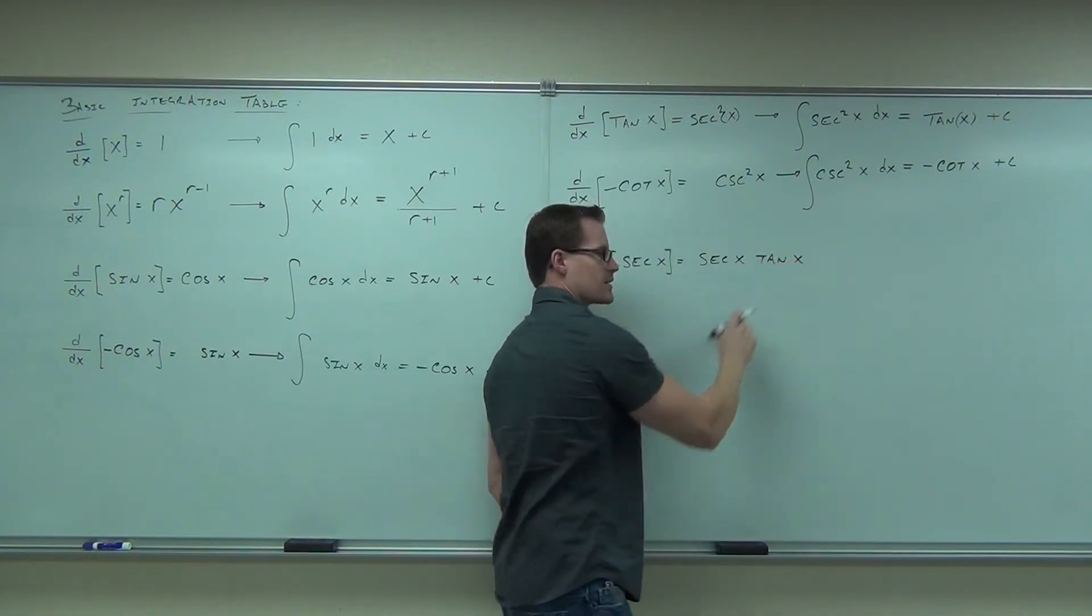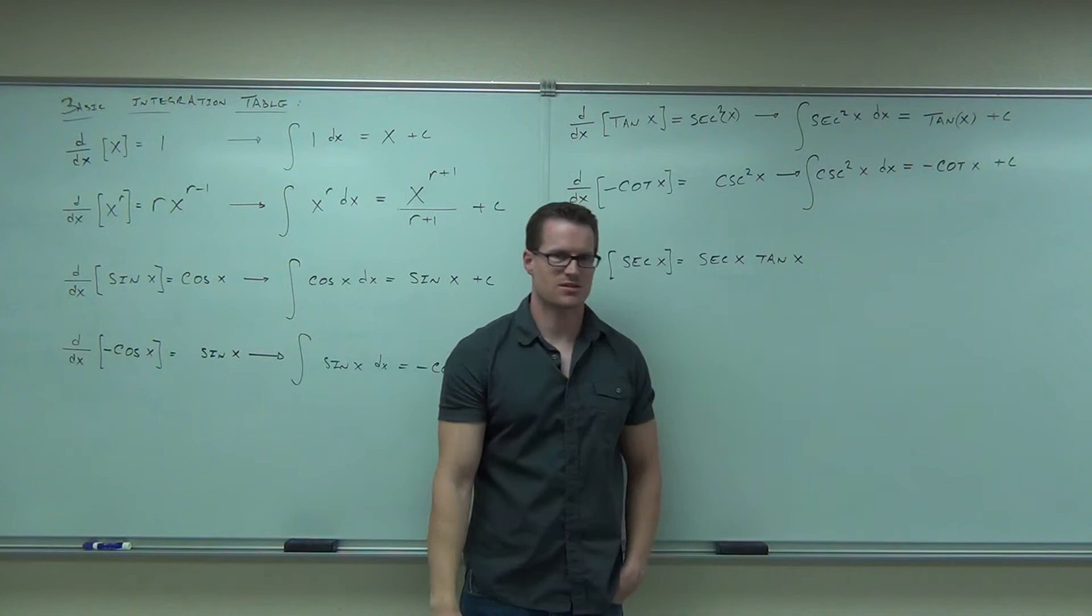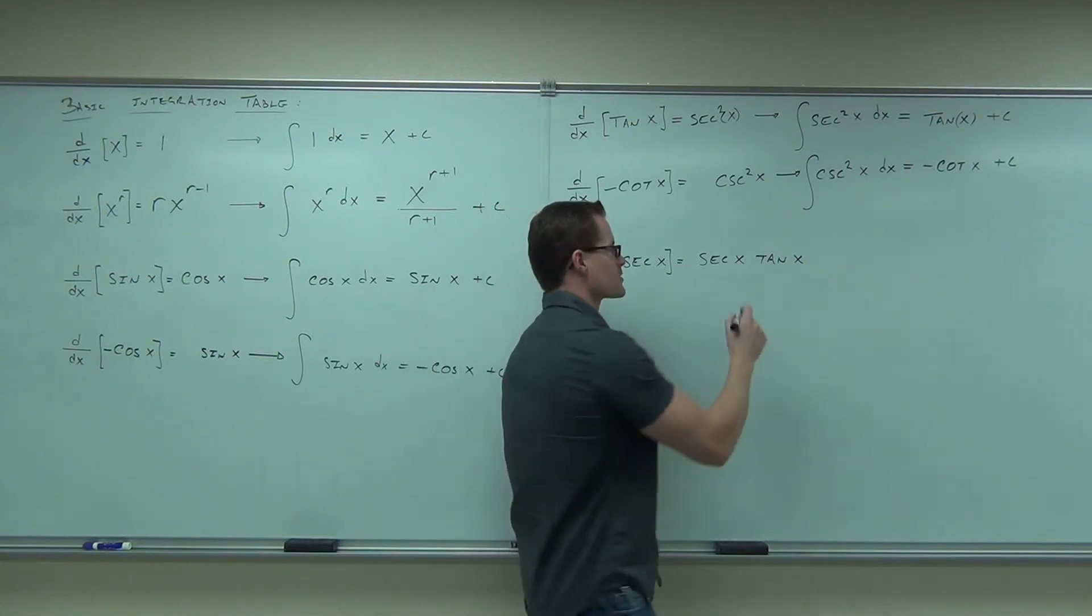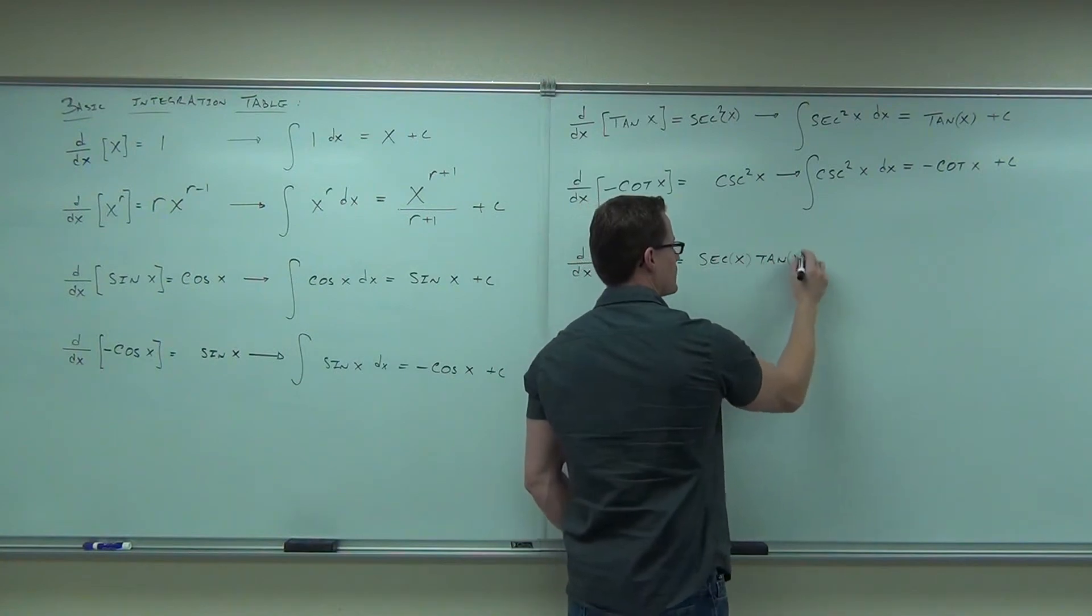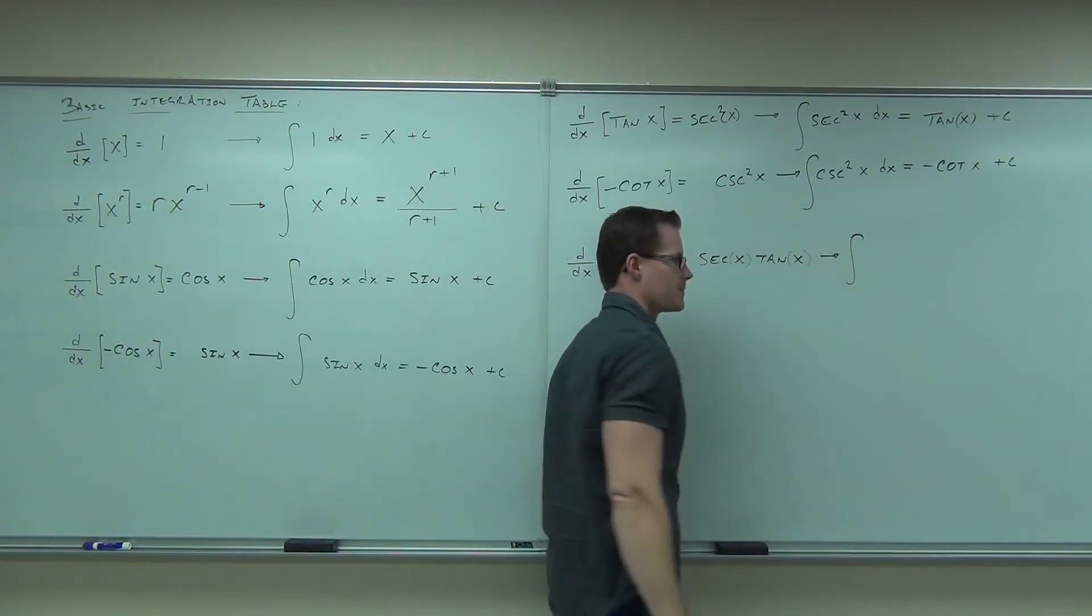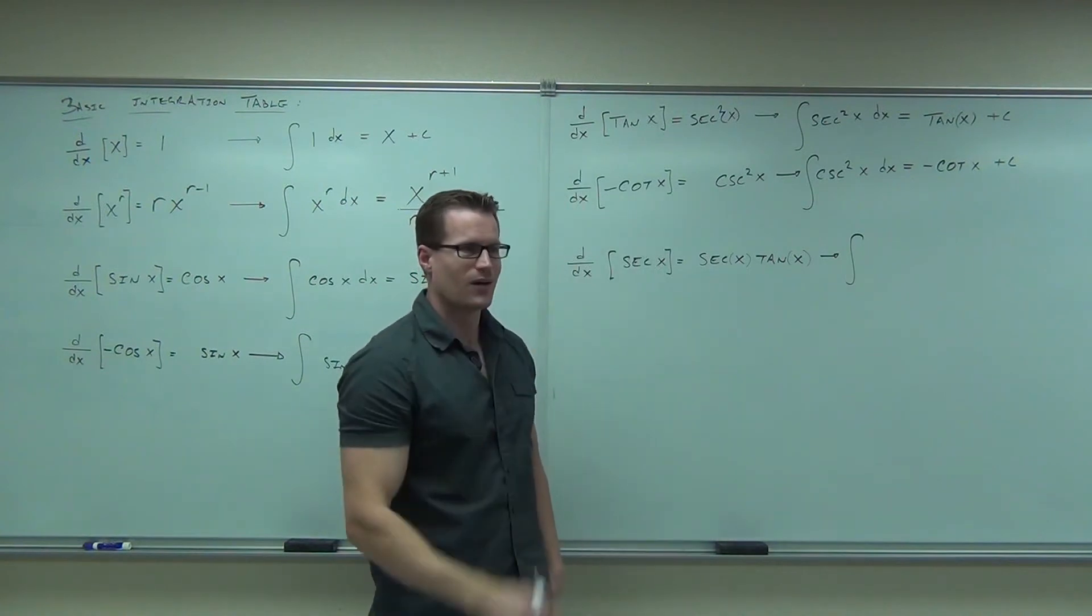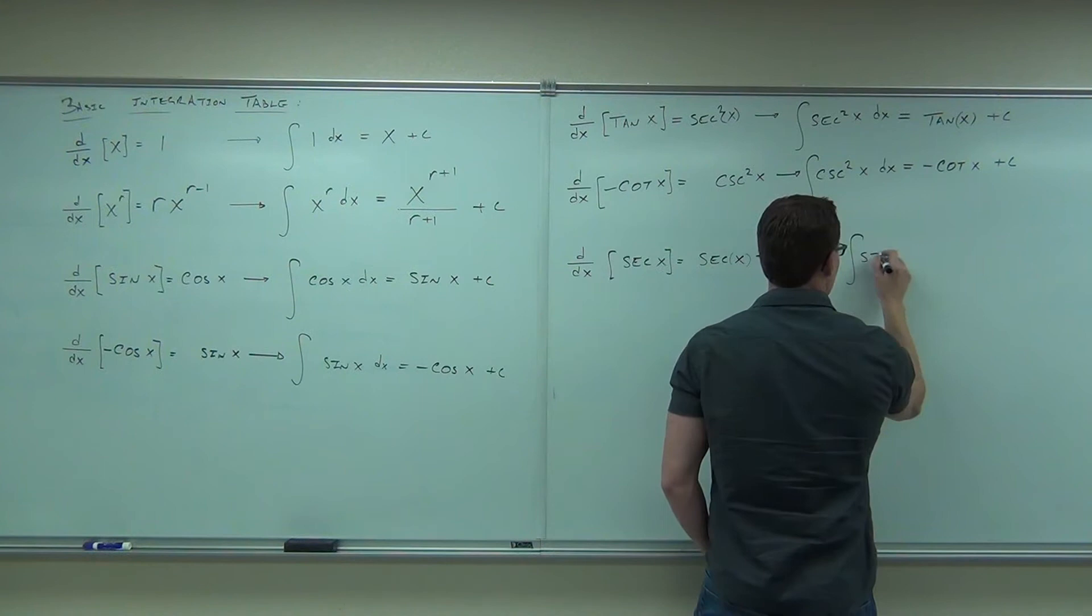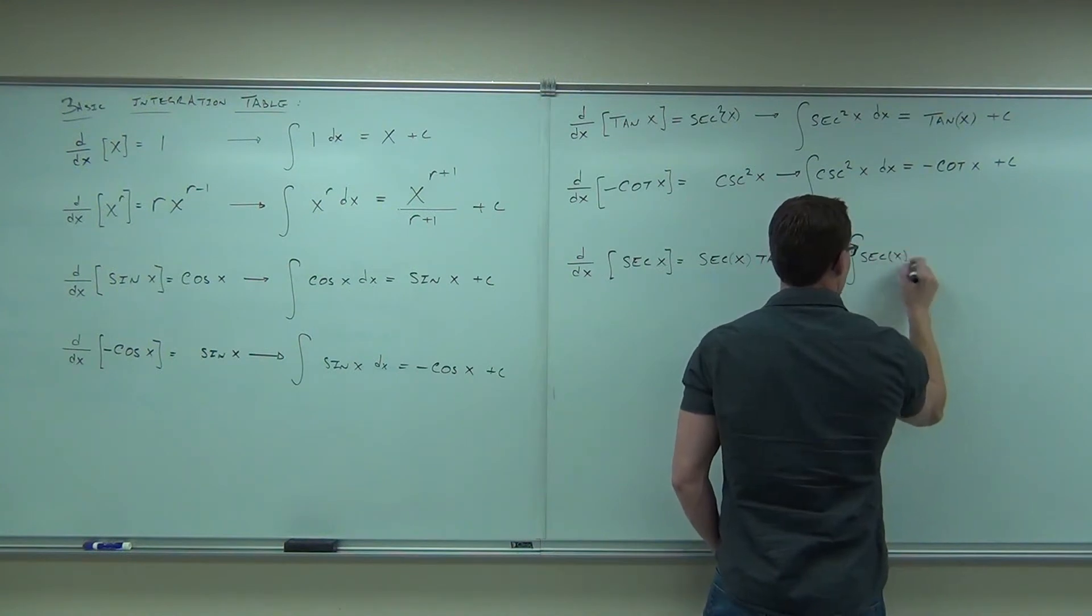By the way, don't forget that x. It's not secant tangent x. It's secant x tangent x. Secant x times tangent x. So this is like this. Well, then what's the integral of secant x tangent x? Secant x plus c.